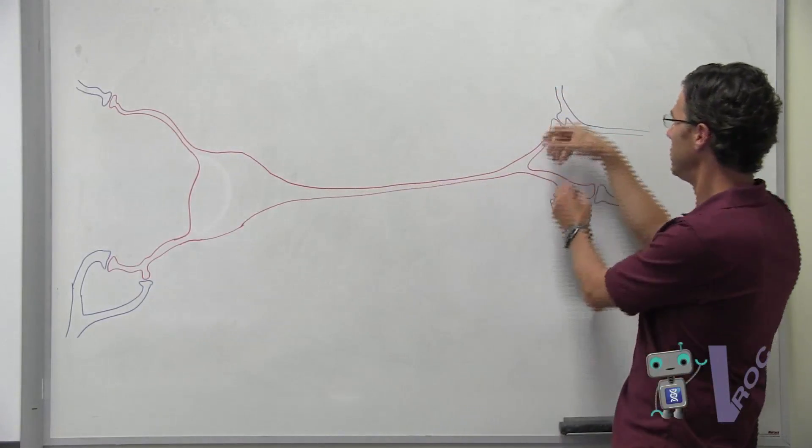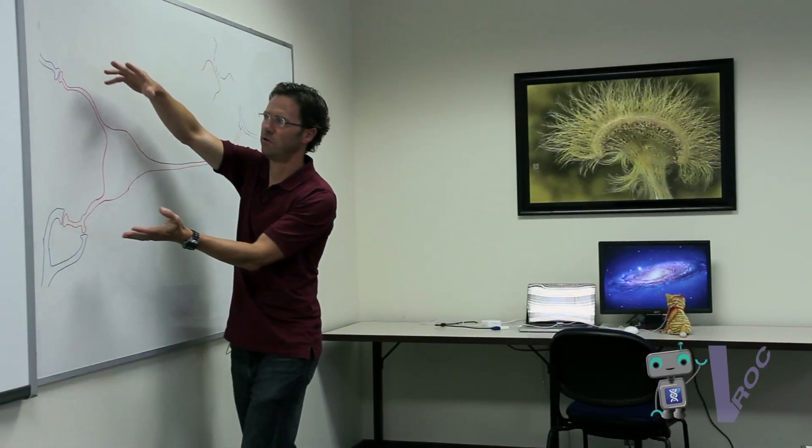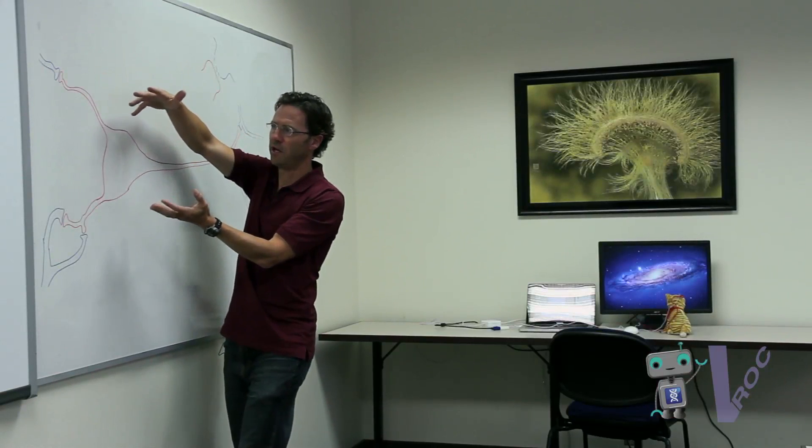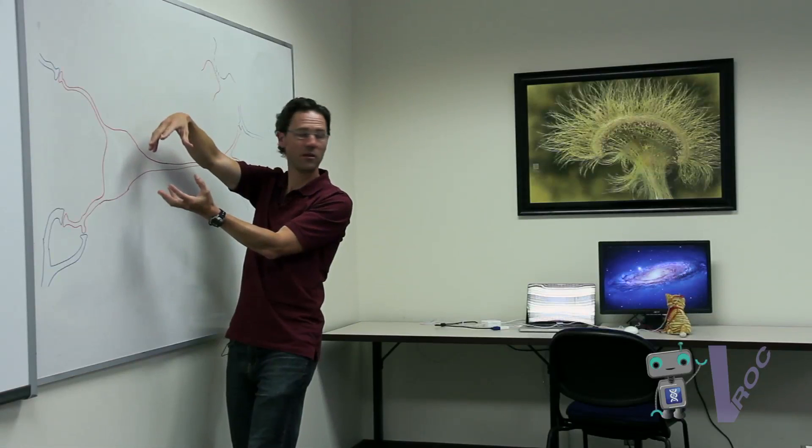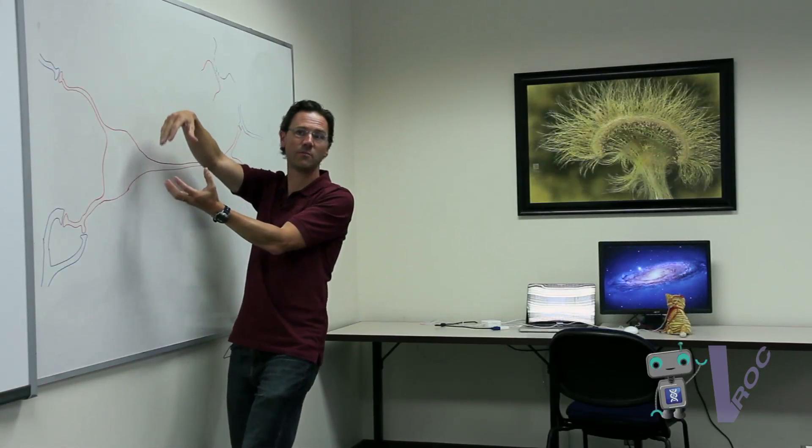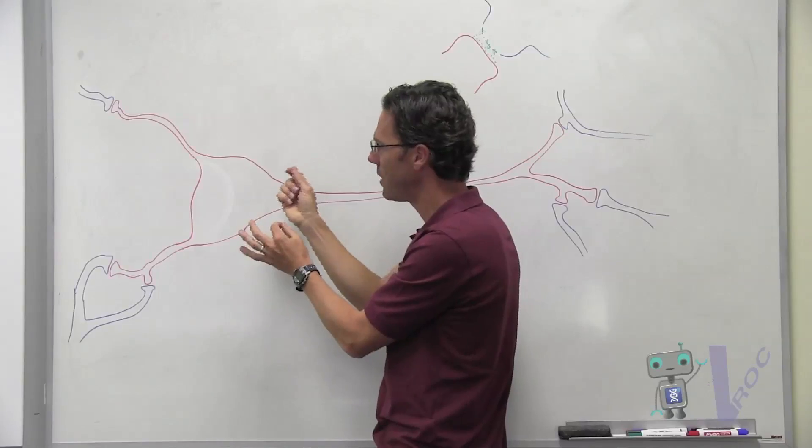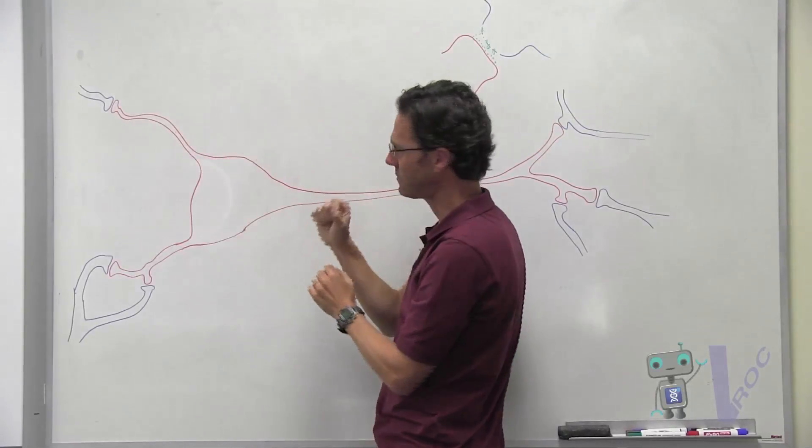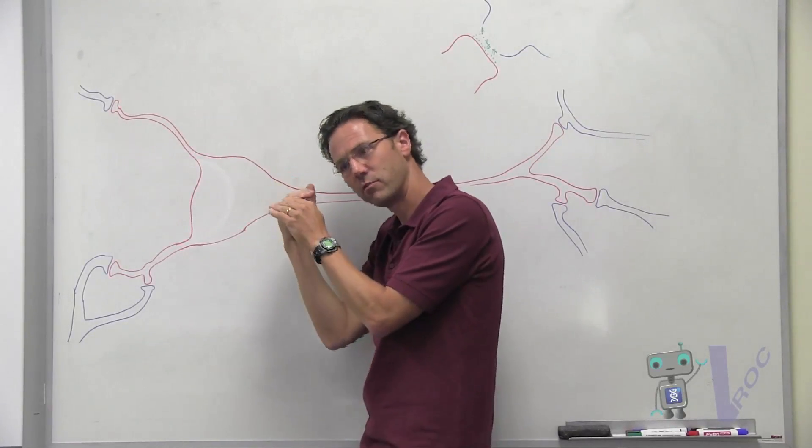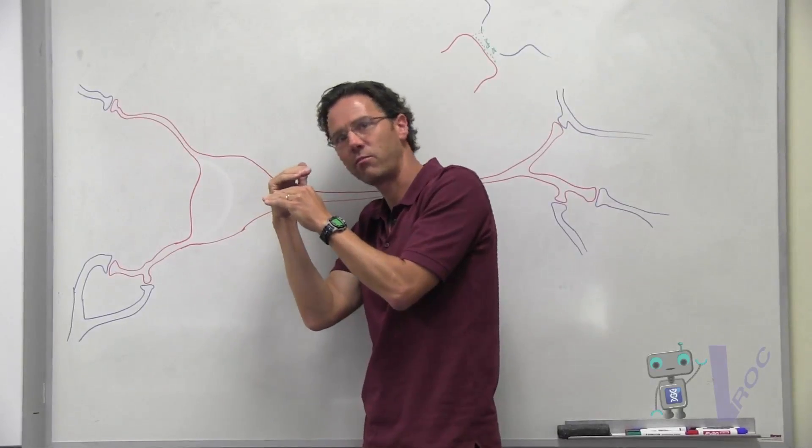It sends it down its axon to other neurons. As the electrical activity comes in, it can build up the electrical charge, but then it can dissipate out. The way the cell membrane works is that once you get over a certain threshold, once you get slightly above that threshold,